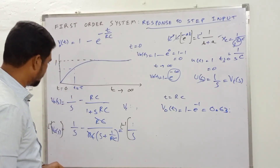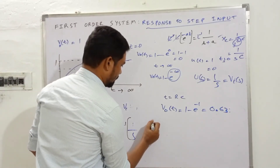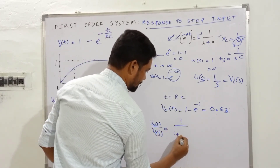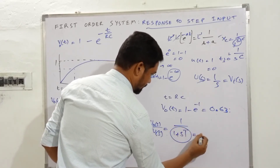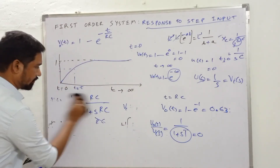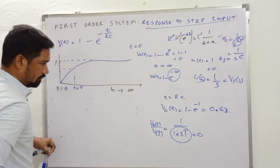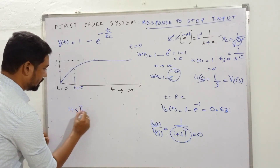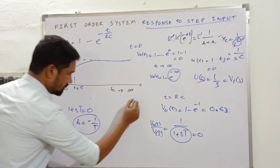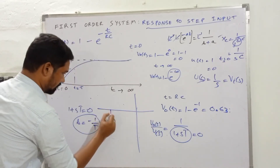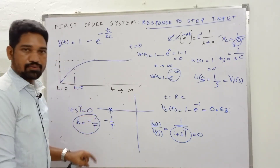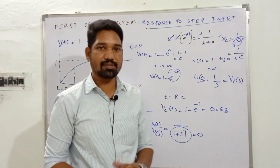For the pole location: from the transfer function V_out(s)/V_i(s) = 1/(1 + sT), setting the denominator equal to zero gives 1 + sT = 0, so s = −1/T. This is the pole location, shown on the s-plane as a point at −1/T on the negative real axis. This is the pole location for the first order system. Make a note of this — hope you understood the analysis. Thanks for watching.